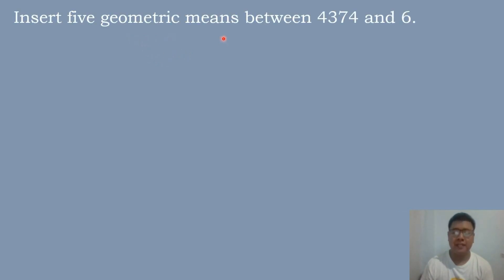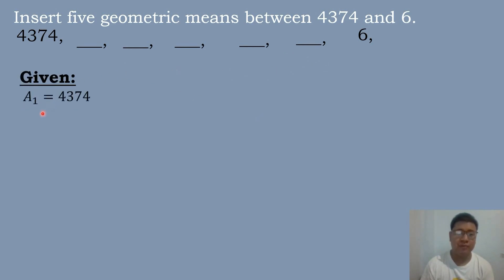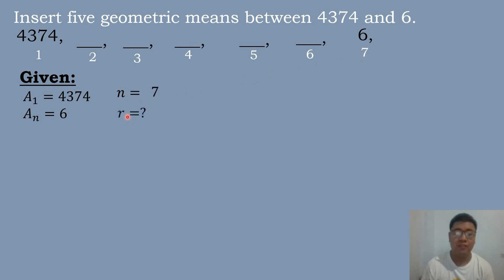Let's solve our second example: insert 5 geometric means between 4,374 and 6. We write 4,374 and 6, and insert 5 blanks between those numbers. The given values are: a sub 1 equals 4,374, a sub n equals 6, and counting all terms — 1, 2, 3, 4, 5, 6, 7 — we have n equals 7. We will now find the value of the common ratio using the formula of the geometric sequence.